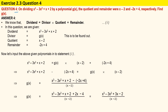Question number 4 states: on dividing the polynomial x³ - 3x² + x + 2 by a polynomial g(x), the quotient and remainder were x - 2 and -2x + 1 respectively. Find g(x).